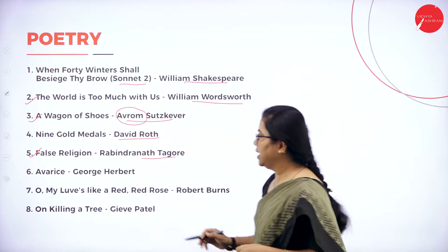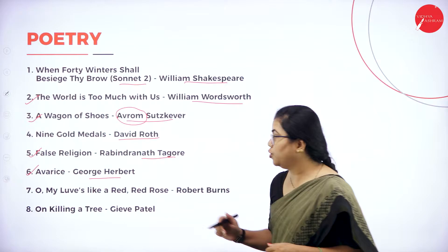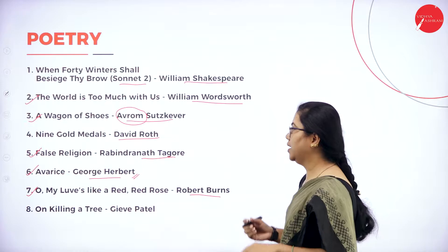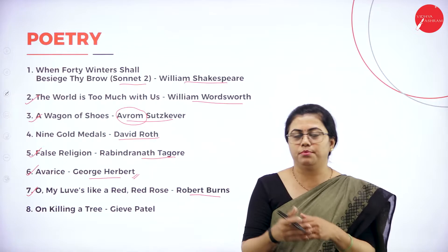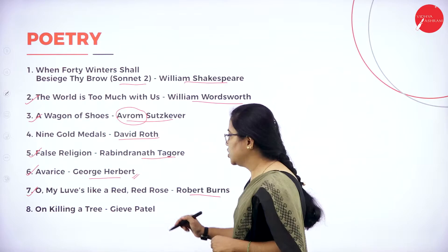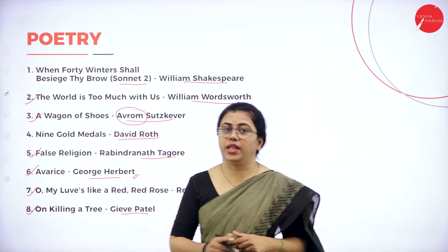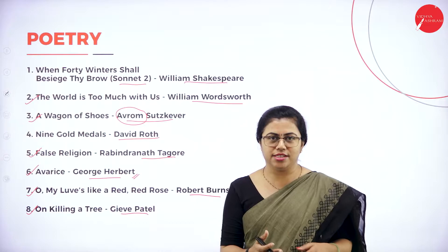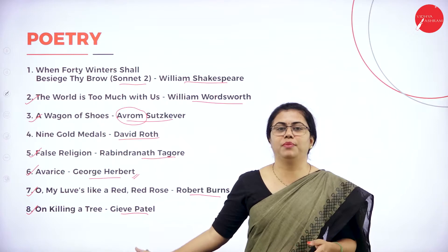Then we have George Herbert's 'Avarice' — also a very interesting poem you'll enjoy reading. Then Robert Burns has a romantic poem, 'Oh My Love's Like a Red, Red Rose,' where he compares his love to the red rose, though it is compared differently in this poem. Finally, Giv Patel's 'On Killing a Tree' is also related to nature — discussing what happens and what the consequences are of killing a tree. You don't just cut a tree; Giv Patel writes about how you actually kill a tree. This completes the collection of 8 poems under poetry.